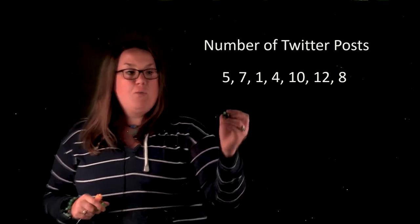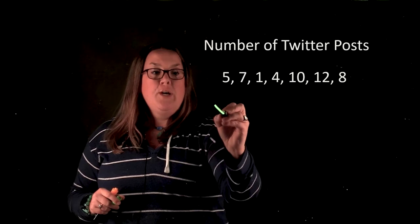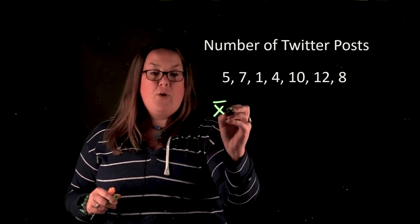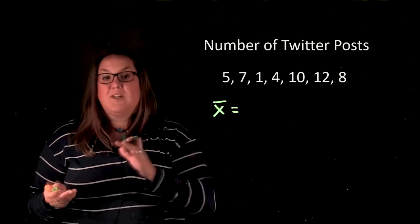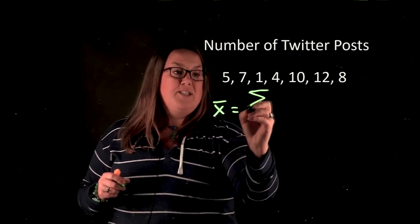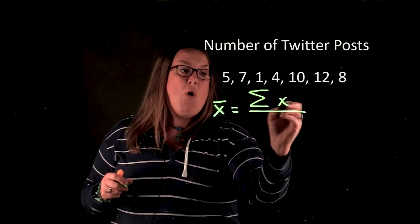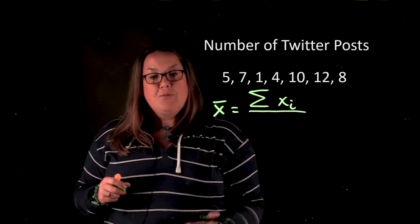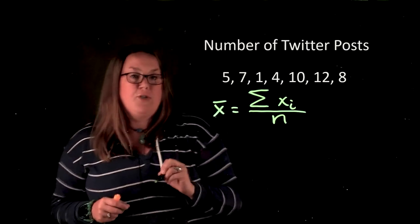In the last video we talked about different notation. Here we have the notation for X bar, which if you remember is the notation for sample mean. When you calculate an average, essentially what you do is sum all of the observations—that's what the numerator means—and you divide by the number of observations.